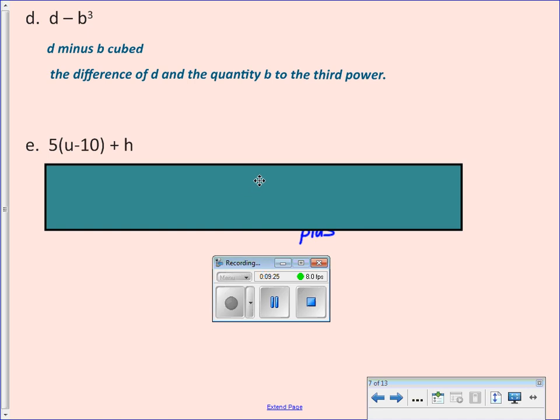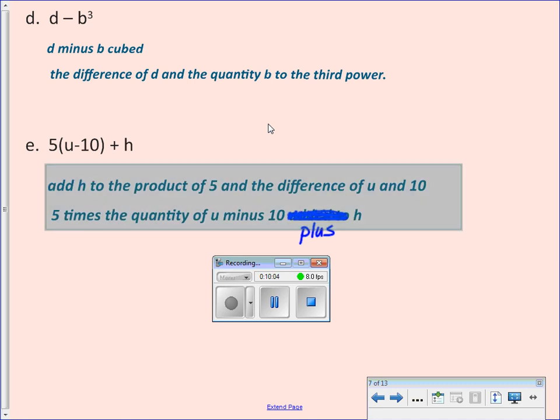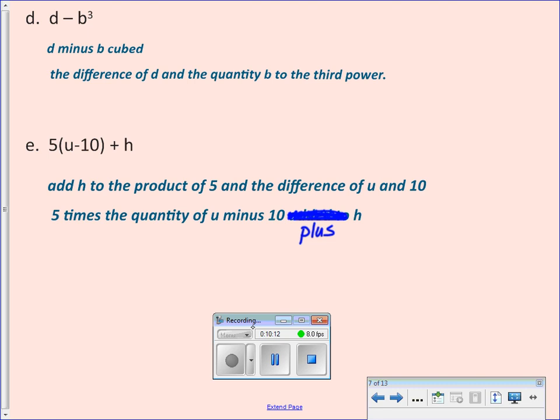Let's try the next one. We have to be very careful with E. We have to make sure we put in a word telling us we need the parentheses. Just like we discussed when we went over the homework. So I have to be careful. Because if I say 5 times U minus 10 plus H, that's telling me to multiply first. I have to be careful on how I'm going to write that one. How do you think we should write it? The difference between U and 10 times 5 plus H. So, or add H to the product of 5 and the difference of U and 10. 5 times the quantity of U minus 10. So the quantity is telling me that that's where I need to put my parentheses.